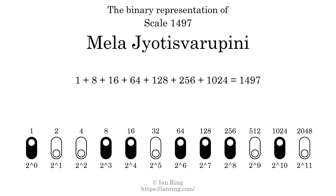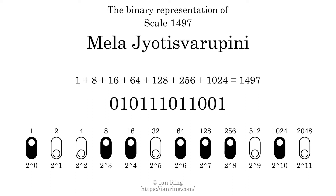The scale number not only enumerates the scale with a unique index, but it also literally describes the tonal content of the scale, represented as a binary number in base 2. The scale number is 0, 1, 0, 1, 1, 1, 0, 1, 1, 0, 1, 0, 0, 1.